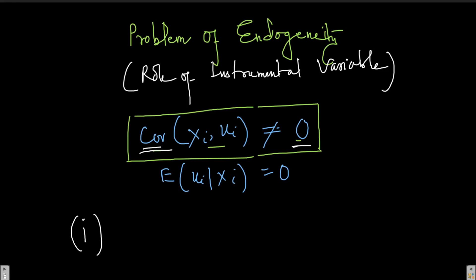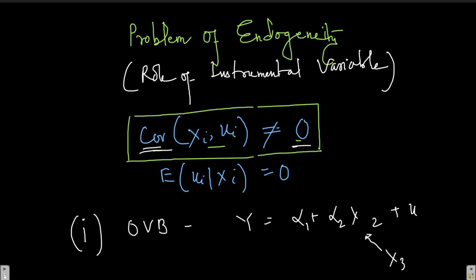One source of endogeneity is omitted variable bias. Suppose our regression equation is y = alpha_1 + alpha_2*x_2 + u, and an important regressor x_3 is omitted. If x_3 influences both x_2 and u, then x_2 and u are not independent, so covariance of x_i and u_i is not equal to zero. This is the omitted variable bias, which creates an endogeneity problem we need to address.